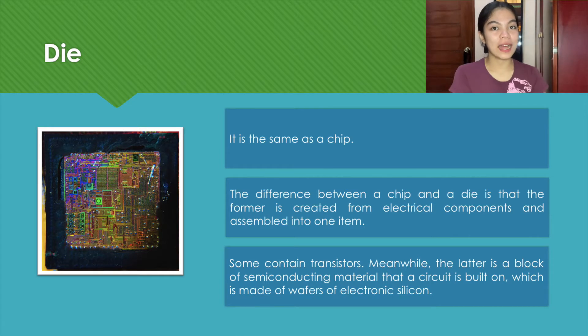The fourth term is a die. A die is the same as the chip. The only difference between the chip and the die is that the former is created from electrical components and assembled into one. Some of it contains transistors.